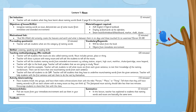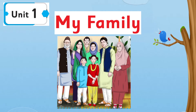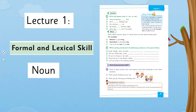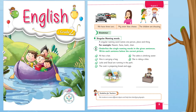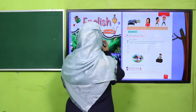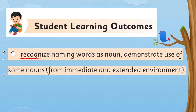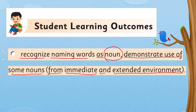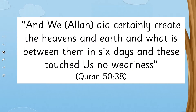My dear students, today under the title of Unit One, 'My Family,' we are going to learn under the title of formal and lexical skill about nouns. Before this, in English for Grade 2, I have already taught you about singular naming words. I hope you remember; if not, you may watch that video lecture again. We are going to learn further — to recognize naming words as nouns and demonstrate use of some nouns from our immediate and extended environment. This is our today's SLO.